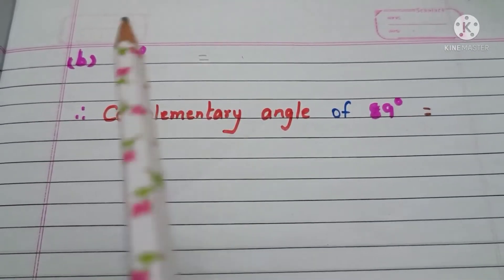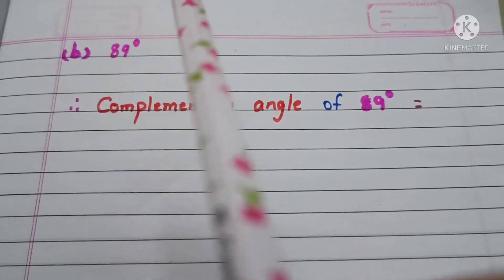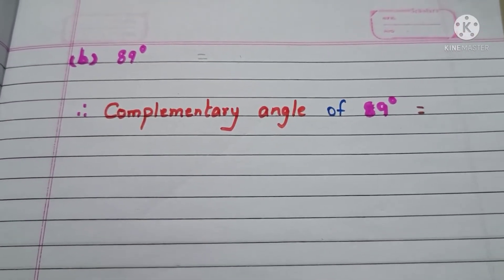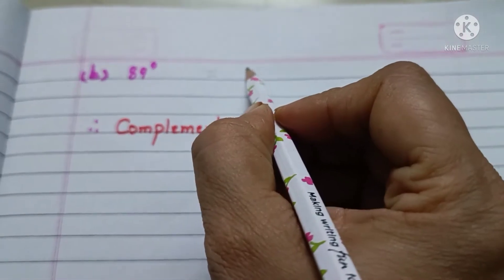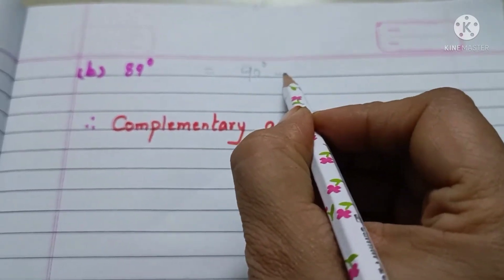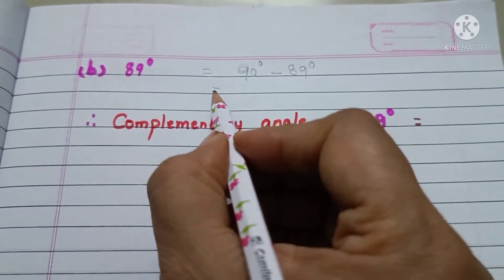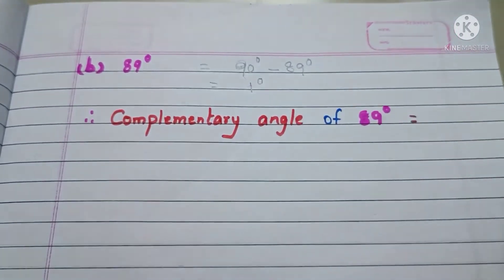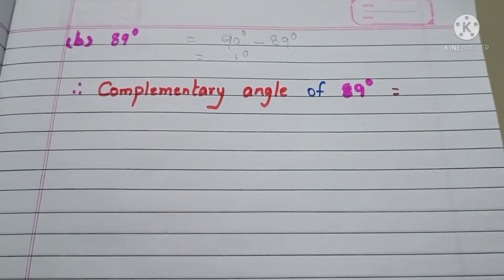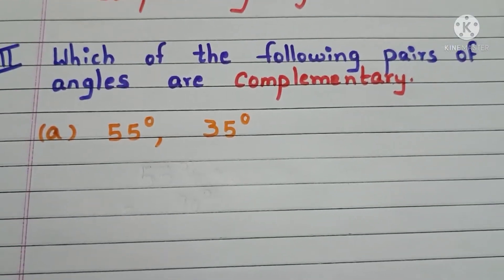Next one is 89 degrees. To find the complement of 89 degrees, subtract 89 degrees from 90 degrees. So, 90 degrees minus 89 degrees, that is equal to 1 degree. Therefore, the complementary angle of 89 degrees is 1 degree.